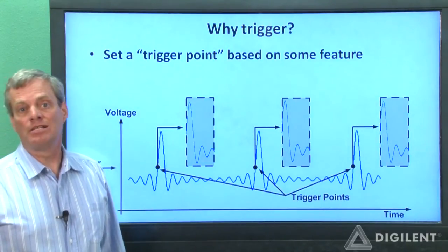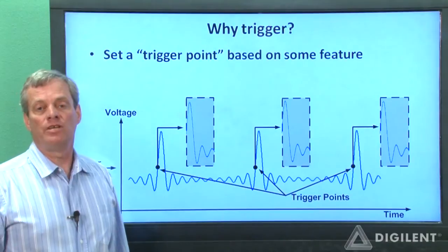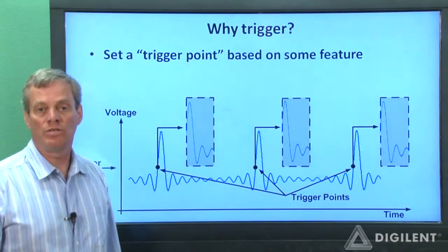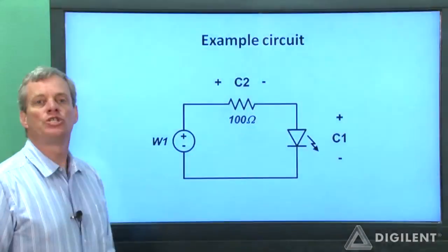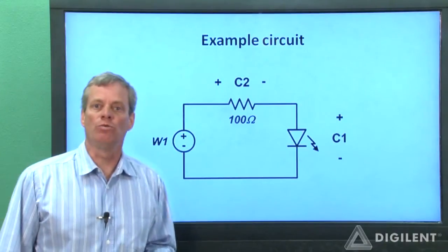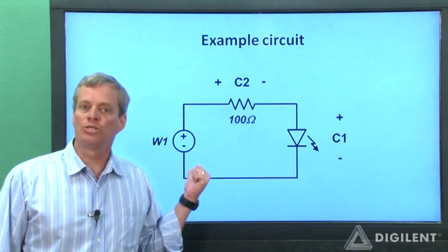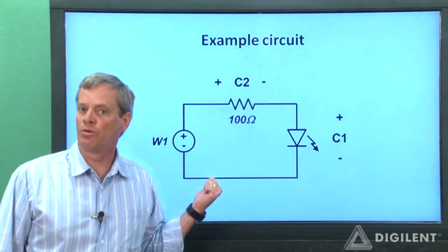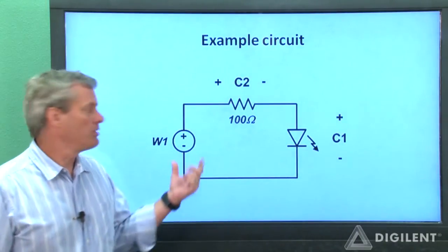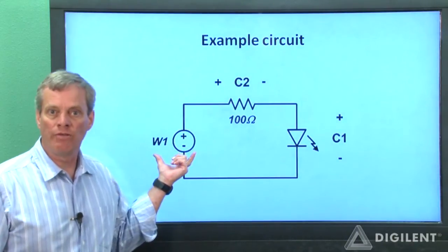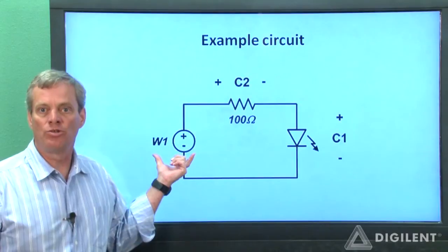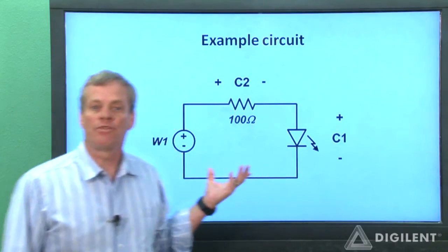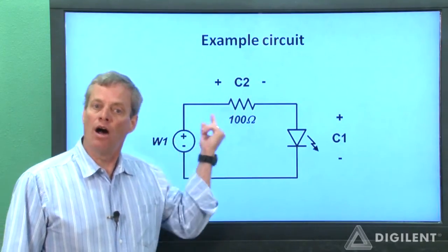We'll discuss using triggering to display and freeze non-periodic signals in a later project on single sequence acquisition. To show an example of triggering in action, we'll use a similar circuit to the one we used in our first oscilloscope tutorial project. The only difference is that we're using channel one of the waveform generator to apply a time-varying voltage to the circuit, rather than manually turning the power on and off.